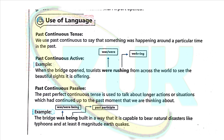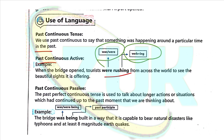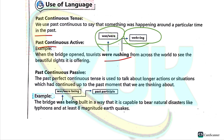Past continuous tense: we use the past continuous tense to say something was happening around a particular time in the past. For past continuous active, for example: 'When the bridge collapsed, officers were rushing.' We use past continuous tense, which is formed with 'was/were' plus the verb with '-ing'.